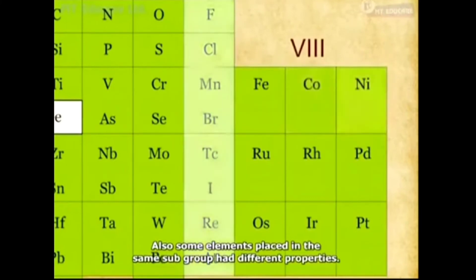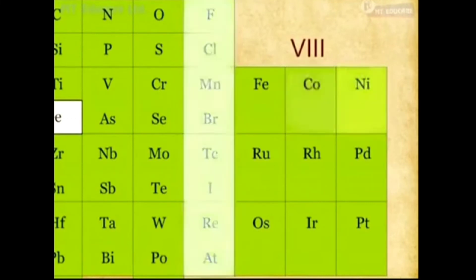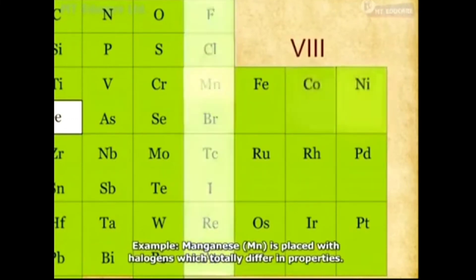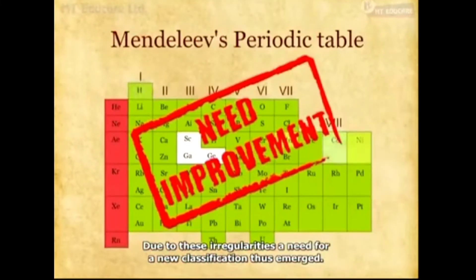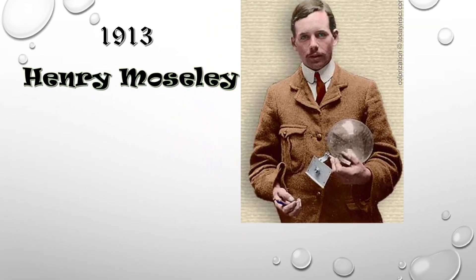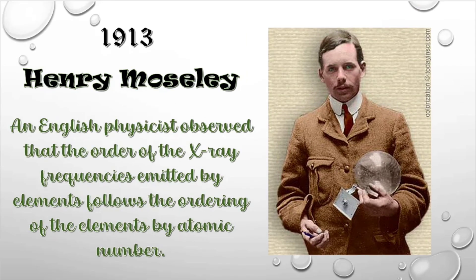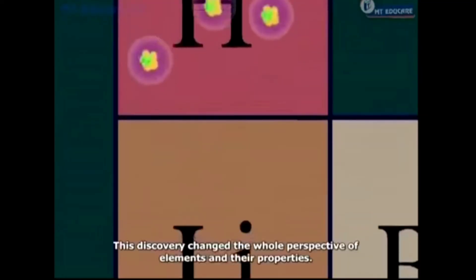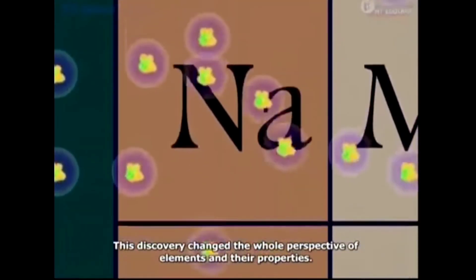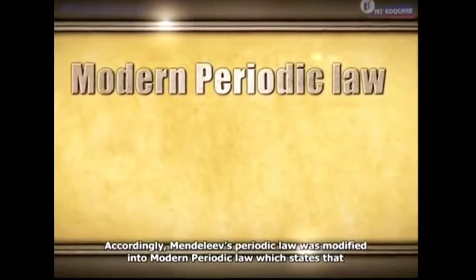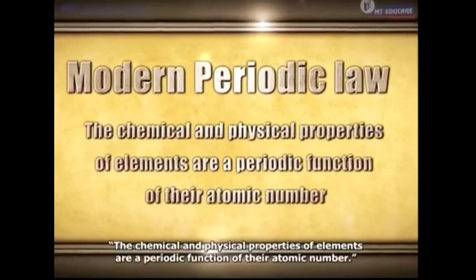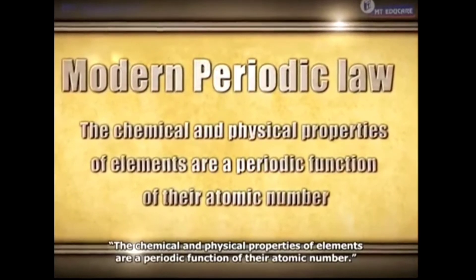Also, some elements placed in the same subgroup had different properties — for example, manganese is placed with halogens, which totally differ in properties. Due to these irregularities, a need for a new classification emerged. In 1913, Henry Moseley, an English physicist, discovered that atomic number is the most fundamental property of an element, and not its atomic mass. This discovery changed the whole perspective of elements and their properties. Accordingly, Mendeleev's periodic law was modified into the modern periodic law, which states that the chemical and physical properties of elements are a periodic function of their atomic number.